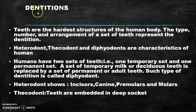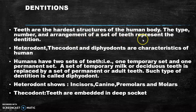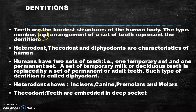Next we will come to dentition. In our body, the teeth are considered the hardest structure. The type, number and arrangement of the set of teeth represents dentition. The arrangement of the set of teeth with their different types and number is called dentition. Heterodont, thecodont and diphodont are the characteristic dentitions of humans.